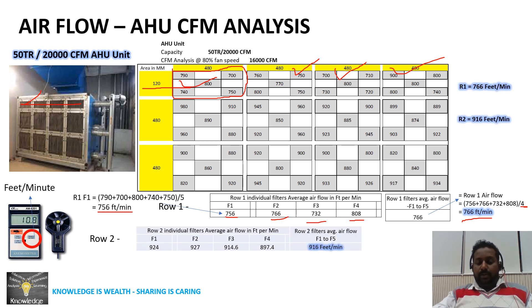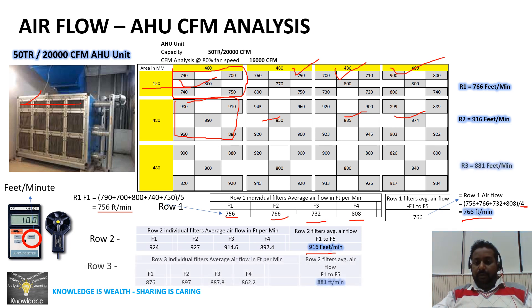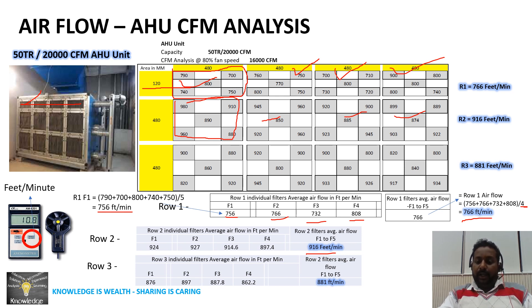Similarly, for row 2: average all four filter readings divided by 4 gives 916 feet per minute for the row 2 filter area airflow. Row 3 is calculated in the same way. This completes the airflow analysis for all filters, row-wise, with readings averaged for rows 1, 2, and 3.